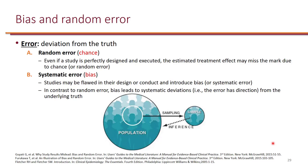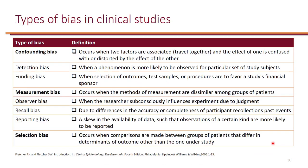The goal is to minimize these errors as much as possible so that the results will be as close as possible to the truth. Here is a list of some common types of bias that you will encounter. There are other types of bias as well, but these are some of the common ones. Please take a moment to review these definitions before you move on to the next slide.